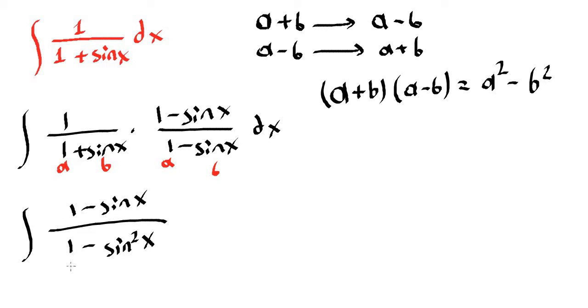Now we can utilize Pythagorean identity here. Pythagorean identity is cosine squared of x plus sine squared of x equals 1. And if you solve for cosine here, 1 minus sine squared of x. So we can rewrite here cosine squared of x.